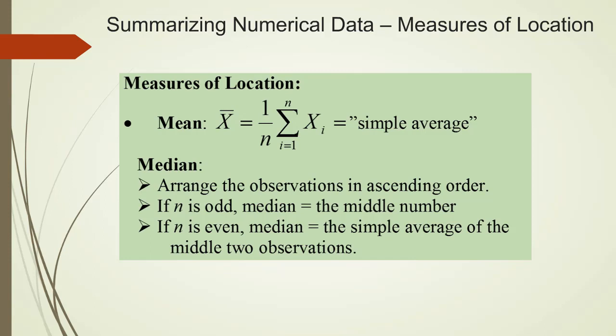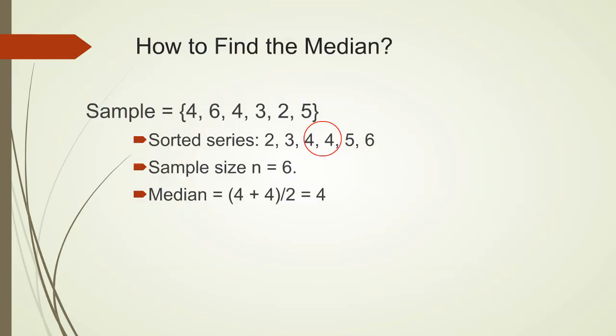Median is also a frequently used measure for location. To find the median, we would have to sort all observations from the smallest to the largest. If the sample size n is odd, median is going to be the number that's right in the middle. If the sample size n is even, median is going to be the average of the middle two observations. This is an example for finding the median of a set of observations. The sample size is 6, which is even. The median is the average of the middle two observations. Therefore, median is the average of 4 and 4, so that is also 4.